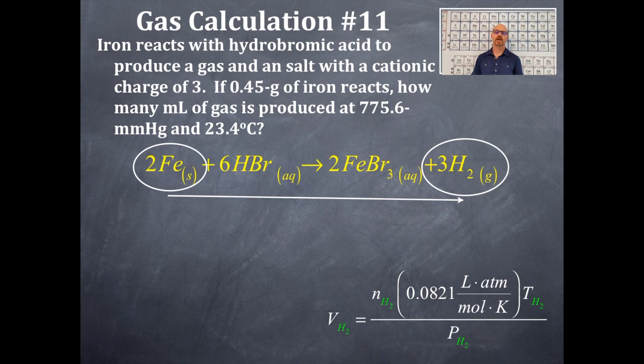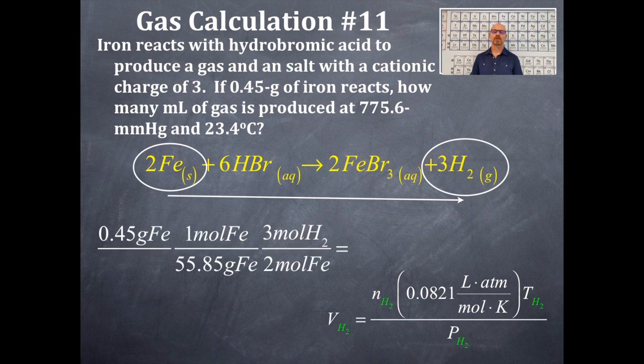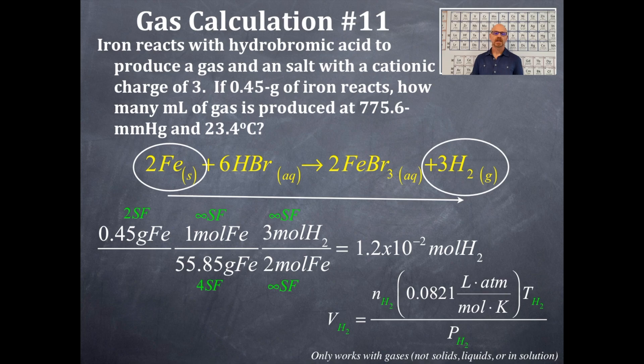We're going to take our grams of iron and convert it into moles of hydrogen. We need to use the ideal gas equation here. I've rearranged it and solved for volume because I am solving for a volume of the hydrogen gas. Notice that I have little H2s all over the place. That means that it needs to be moles of hydrogen, temperature of the hydrogen, pressure of the hydrogen, and the gas constant is already in there. So I need to get the moles of hydrogen. That's 0.45 grams of iron converted into moles of hydrogen using the molar mass of iron and then the mole ratio of iron to hydrogen. That gets me this number right here. You should see that there's two significant figures. My answer is 1.2 times 10^-2 moles of hydrogen. That's going to plug into the N in the ideal gas equation. I'm going to also have to convert the temperature and the pressure in the correct set of units.